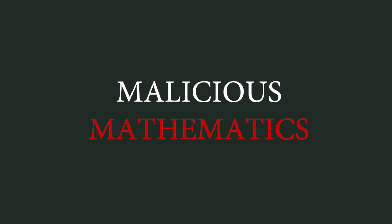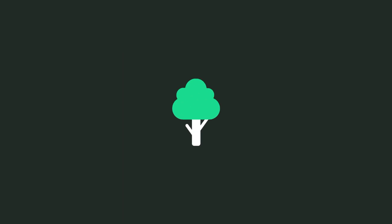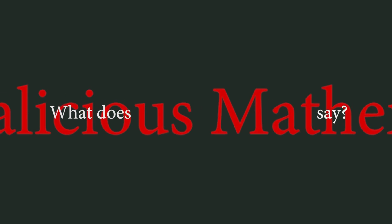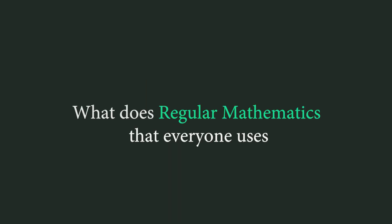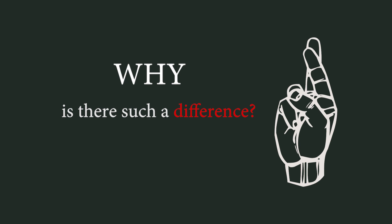There is no better way to learn than by example. So let's get started. Let's find out how many trees we have to plant to compensate for the vehicle emissions from 30 days of Rally for Rivers. What does malicious mathematics say? 8 lakh trees. What does regular mathematics that everyone uses say? 2500 trees. Why is there such a difference? Let's find out.